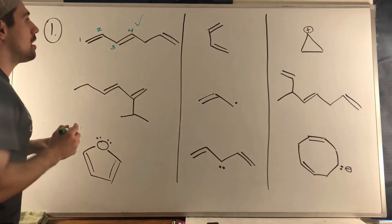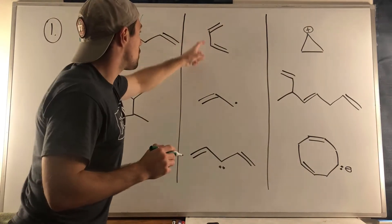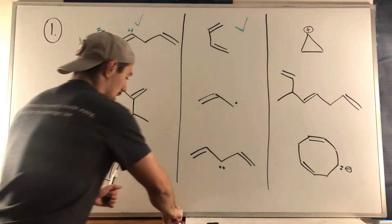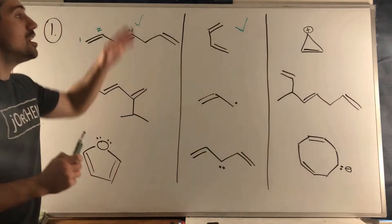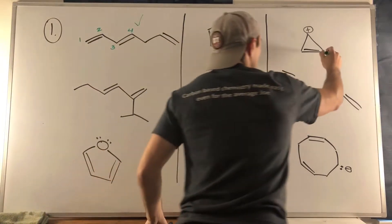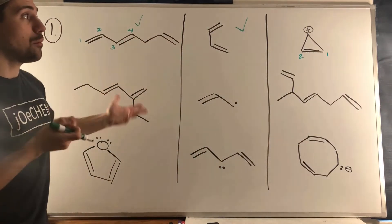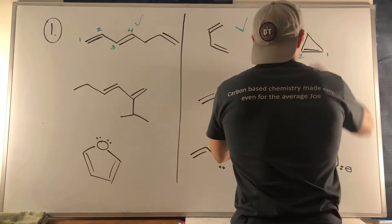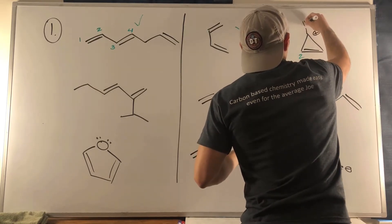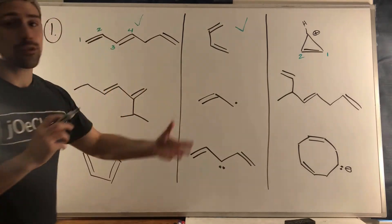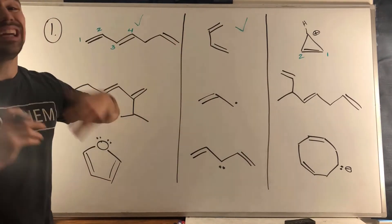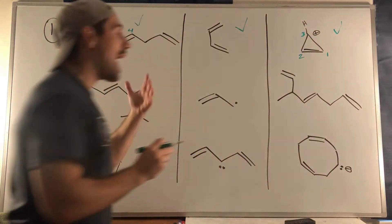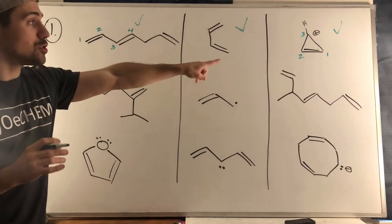Moving along, we see one, two, three, four — sp2, sp2, sp2, sp2, sp2 — this structure is certainly conjugated. And I realized I forgot something: looking at the one on the far right, we see two atoms that are sp2, and you might think that carbon up top isn't part of a double bond. However, it is a carbocation — with three bonding areas it is in fact sp2, it has an empty p orbital — so this is conjugated because that empty p orbital can be parallel to the other two.